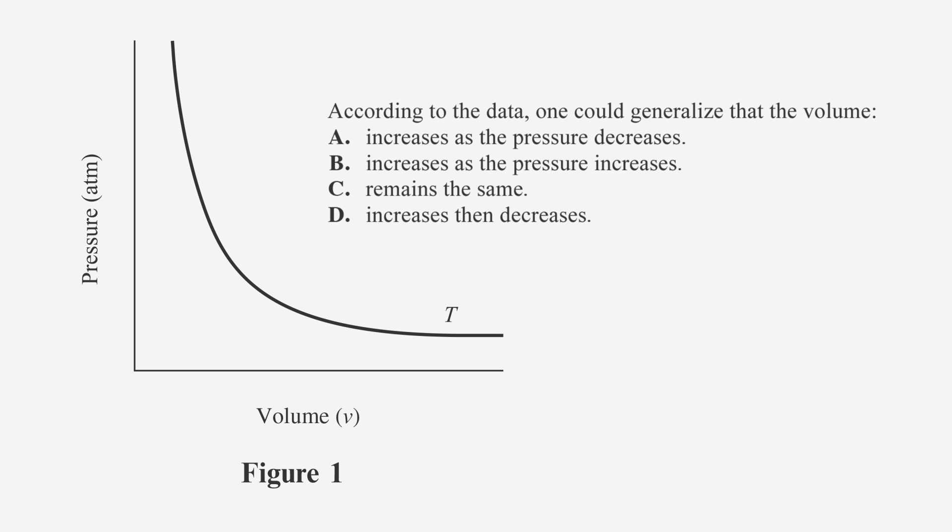According to the data, one could generalize that the volume A increases as the pressure decreases, B increases as the pressure increases, C remains the same, or D increases, then decreases.